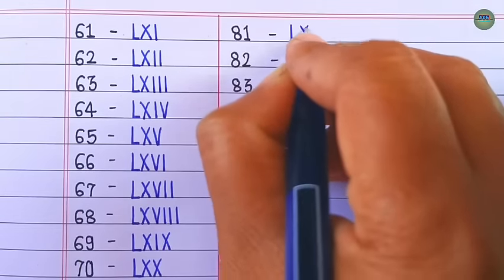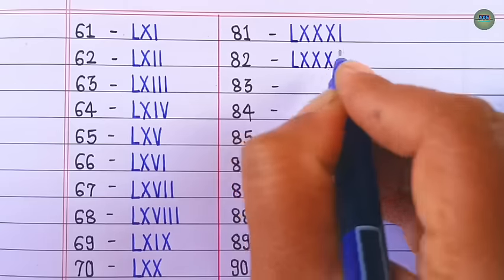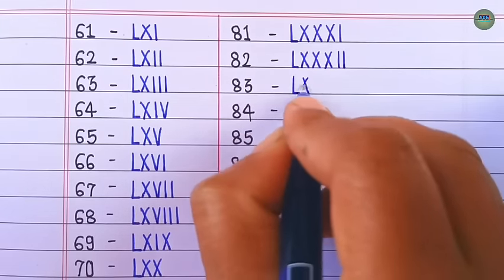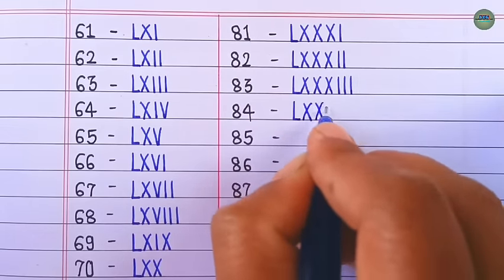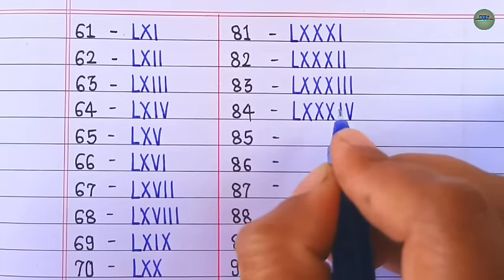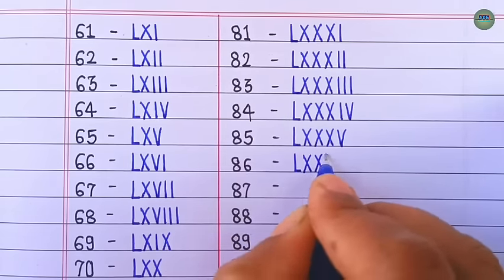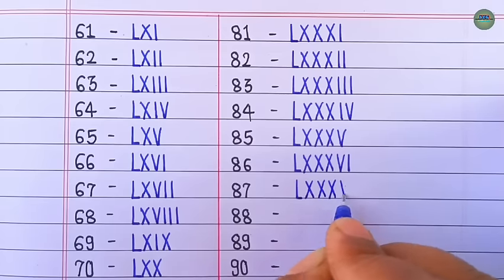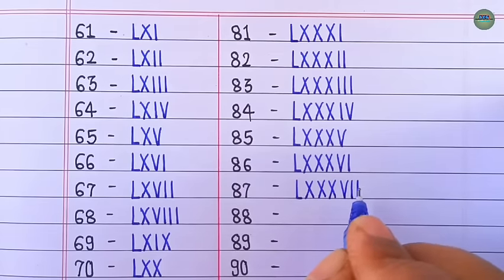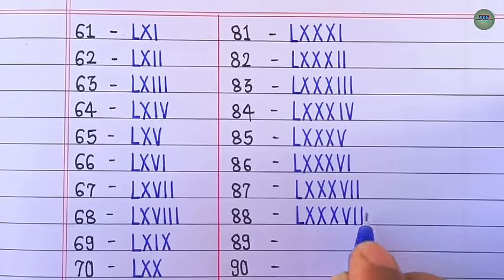81 is LXXXI, 82 is LXXXII, 83 is LXXXIII, 84 is LXXXIV, 85 is LXXXV, 86 is LXXXVI, 87 is LXXXVII, 88 is LXXXVIII, 89 is LXXXIX.